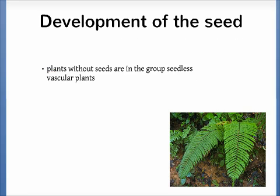The second feature is the development of the seed. Plants that evolved vascular tissue but not seeds are in the group seedless vascular plants. For example, ferns — leafy plants found in moist environments and under forest canopies. They are vascular plants; however, unlike other vascular plants that grow immediately from a seed, ferns reproduce from spores.